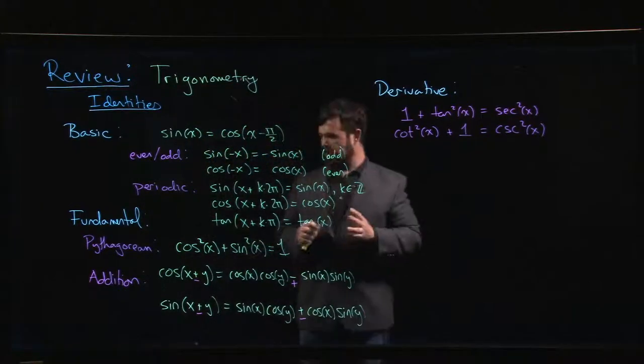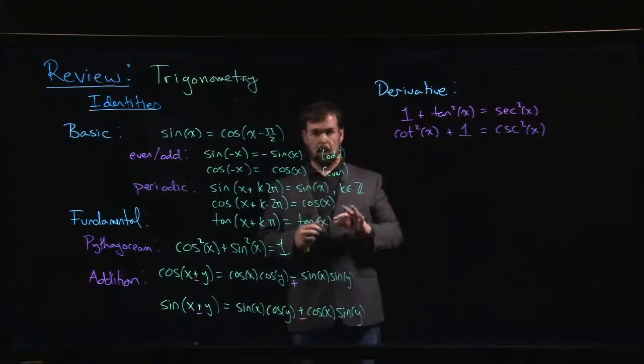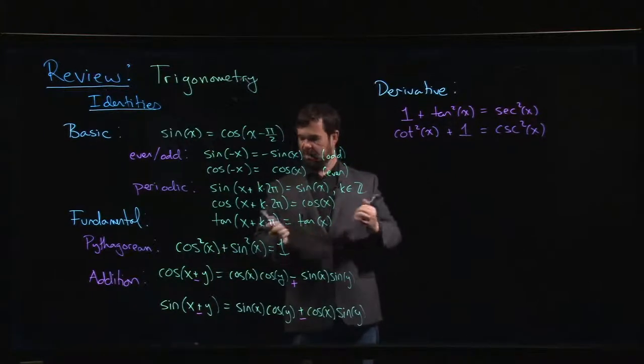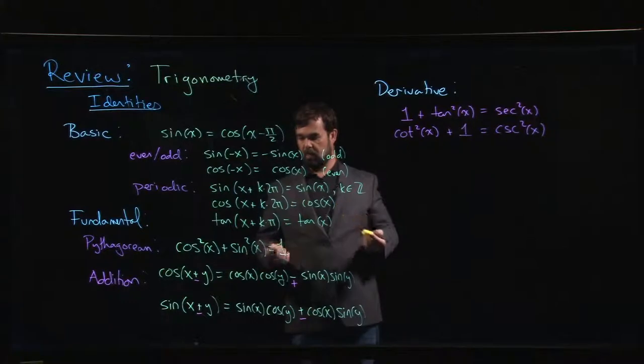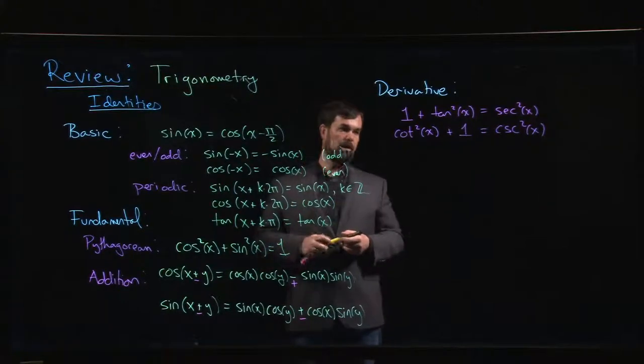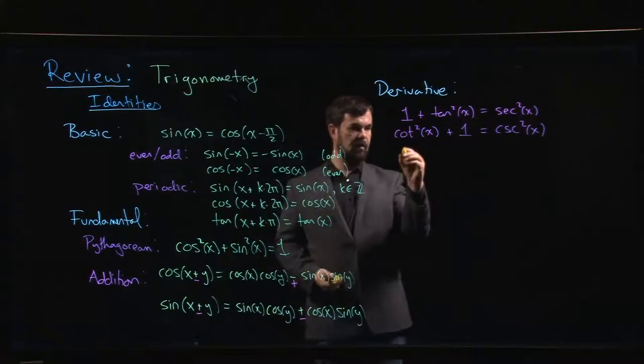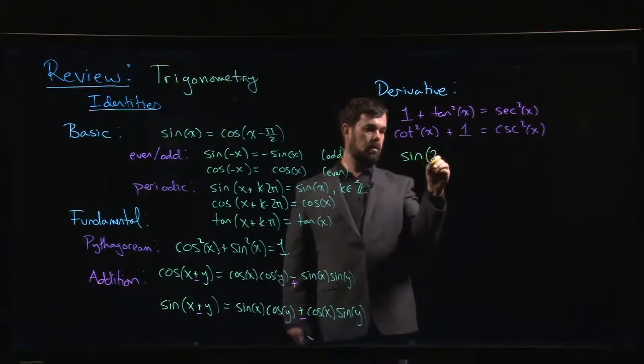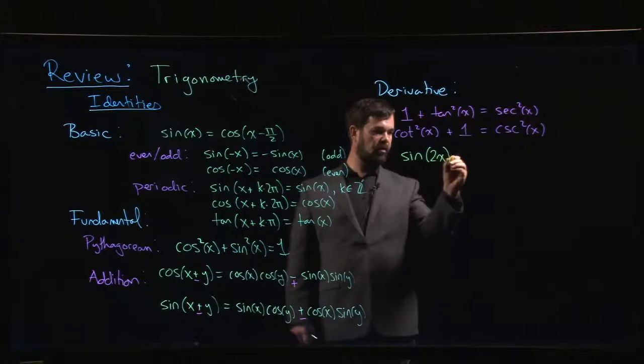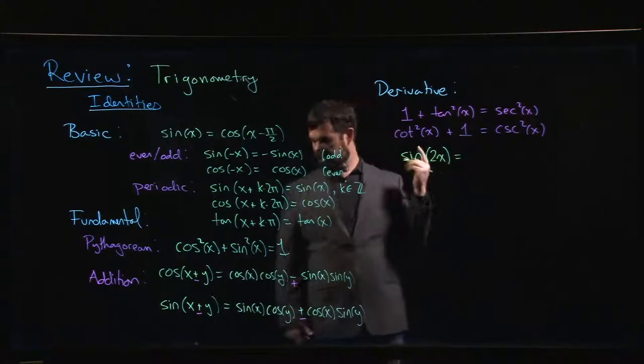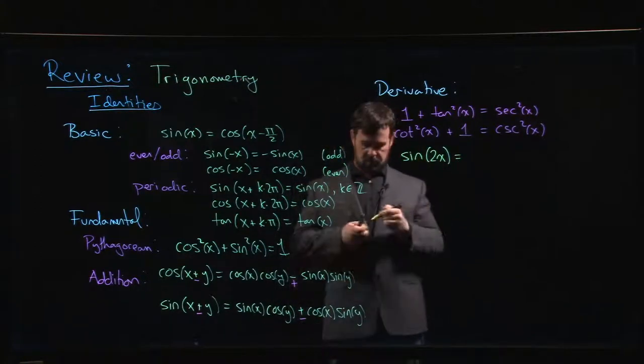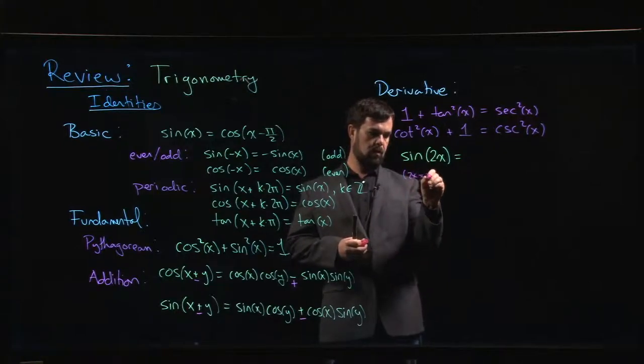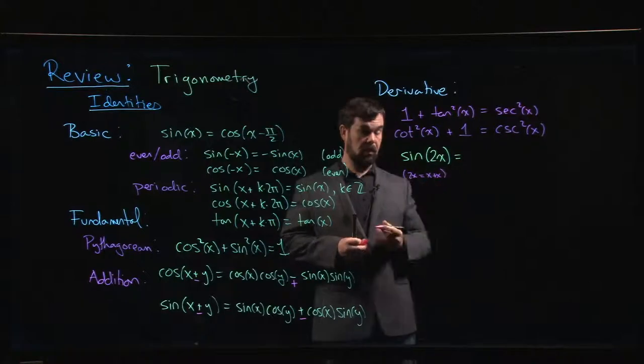The ones that show up throughout calculus quite frequently are these double angle and half angle identities that you can derive from the addition formulas, usually by setting x equal to y or something like that. So we have ones like, if we do sine 2x, well, keeping in mind that sine 2x, what is 2x? 2x is just x plus x, right?